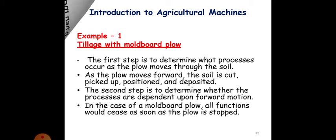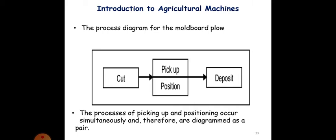I'll give some examples. First example is tillage with the moldboard plow. The first step is to determine what processes occur as the plow moves through the soil. As the plow moves forward, the soil is cut, picked up, positioned, and deposited. The second step is to determine whether the processes are dependent upon the forward motion or not. In case the moldboard plow, all functions would cease as soon as the plow is stopped. You can see the process diagram: cut, pick up, position, and then deposit. The plow will first cut. Picking up and positioning occurs simultaneously and therefore are diagrammed as a pair.